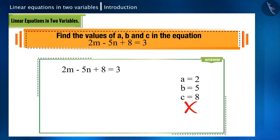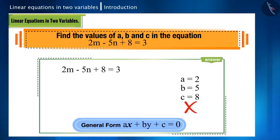First of all, let's see this equation carefully. Is this in general form? No. So first we will write it in its general form. So this is how it looks: 2m minus 5n plus 8 minus 3 equals 0.